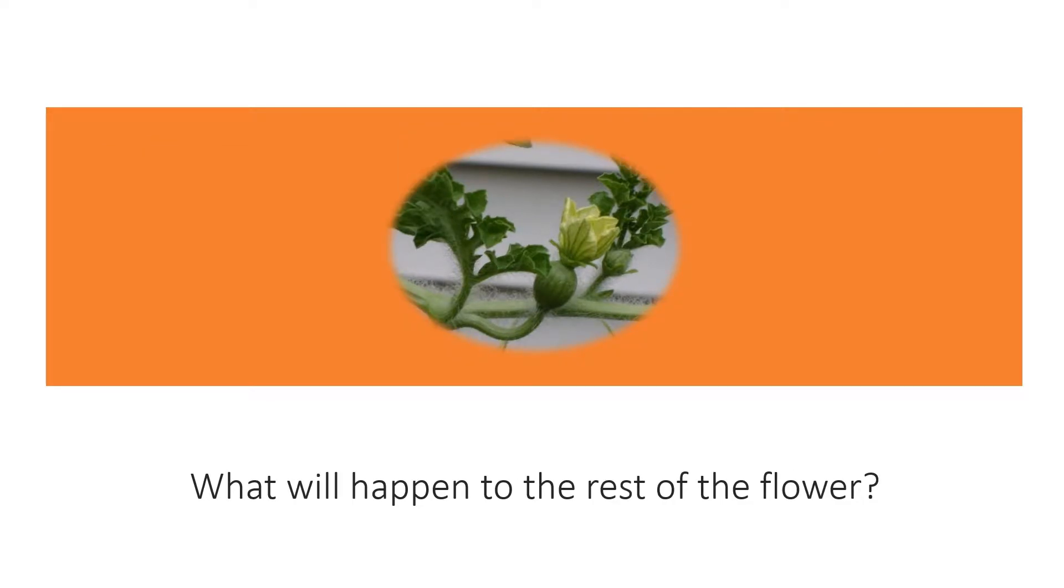If you are asked what will happen to the rest of the flower, as the fruit and the seed are formed, the petals, sepal, stile, stigma, filament and anther will wither out. So it means they will dry and they will fall to the ground.